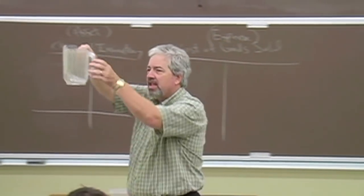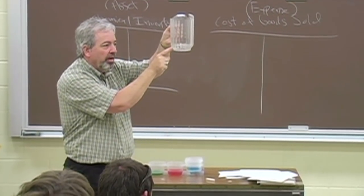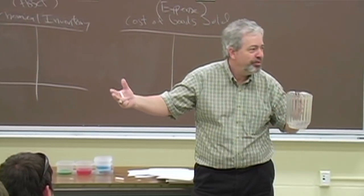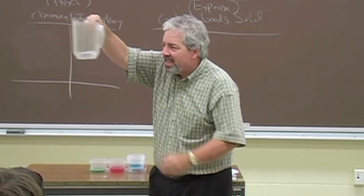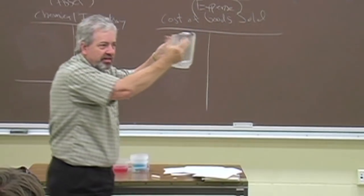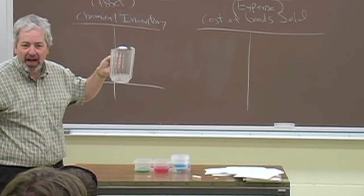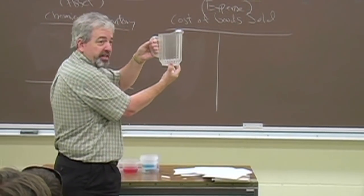I'm using this clear liquid to represent beginning inventory. So if you walked into this bulk plant, now remember this is a miniaturization, all right? If you walked into this bulk plant, you would see five ounces, or probably 500,000 pounds to make it more realistic, of this chemical.